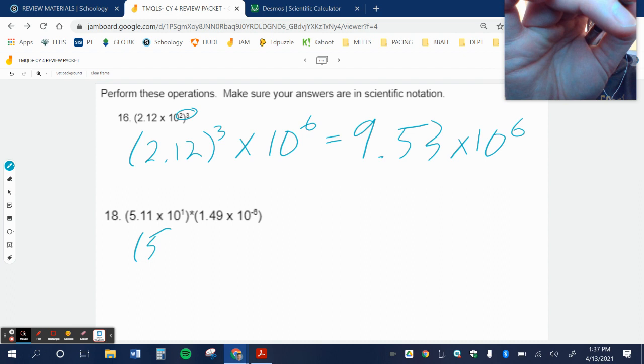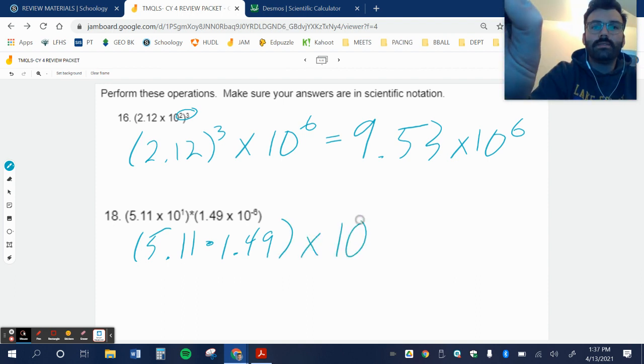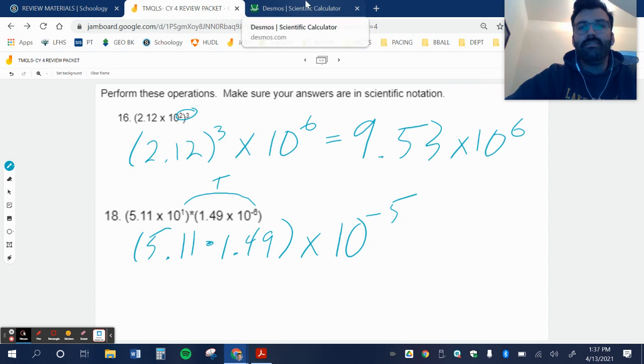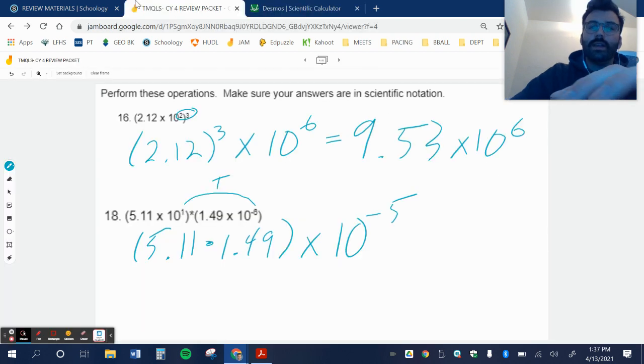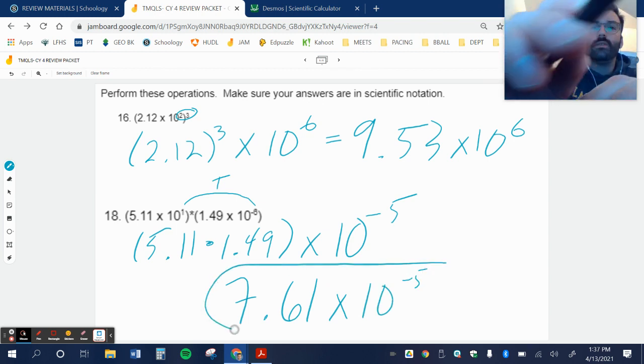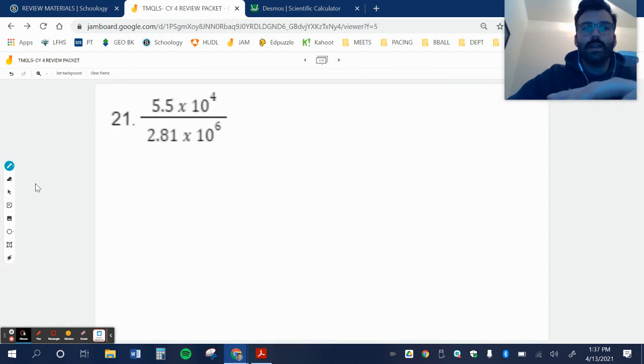All right, let's try number 18. I'm going to multiply my constants, so 5.11 times 1.49, and that becomes times 10 to the negative fifth, since I add my exponents. So 5.11 times 1.49 equals 7.61. Again, I'm very lucky, I don't have to change my scientific notation.